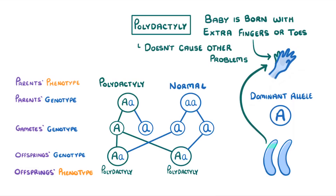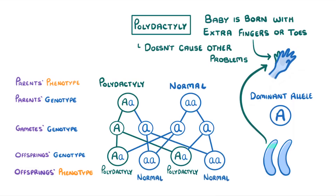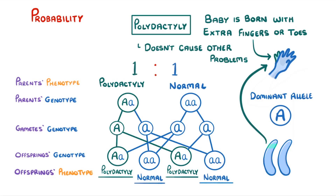So the possible offspring will be two heterozygous individuals that do have polydactyly and two homozygous normal individuals. A common question for genetic diagrams is to give the probability of the different phenotypes in the offspring. Here we have two polydactyly and two normal, which is a one-to-one ratio, or we could say there is a 50% chance of having an offspring with polydactyly in this scenario.